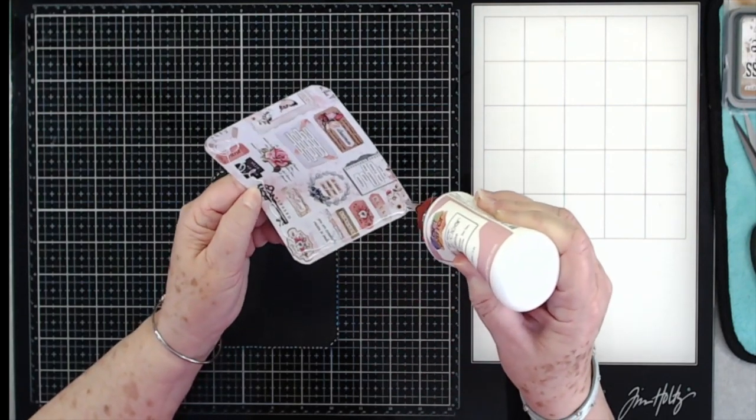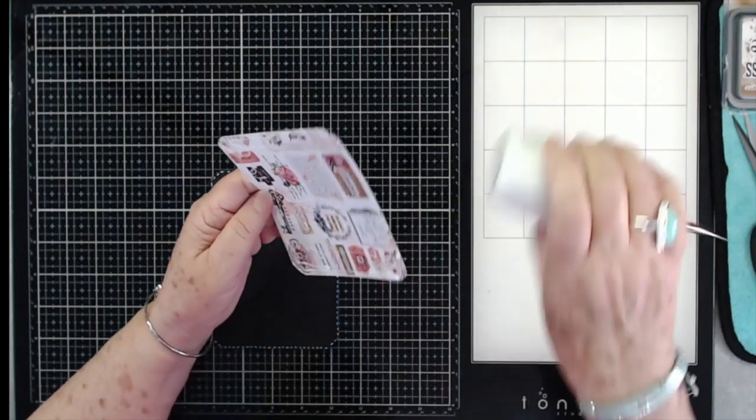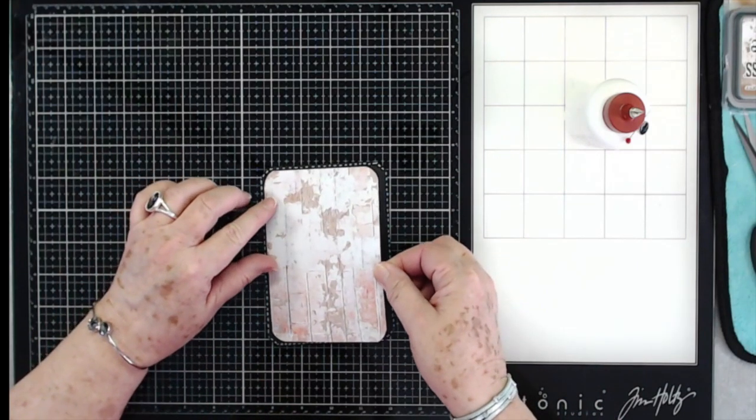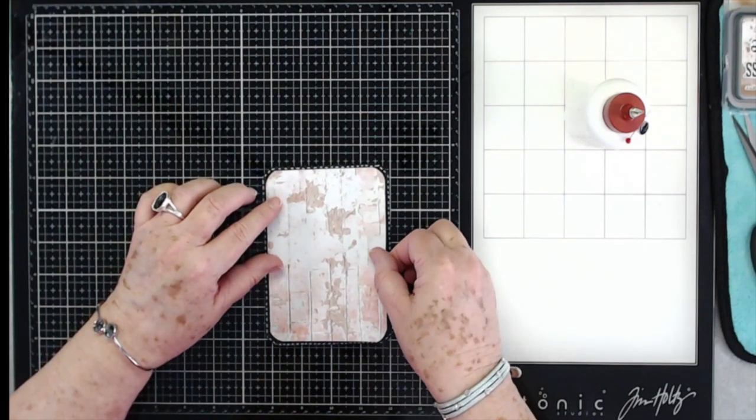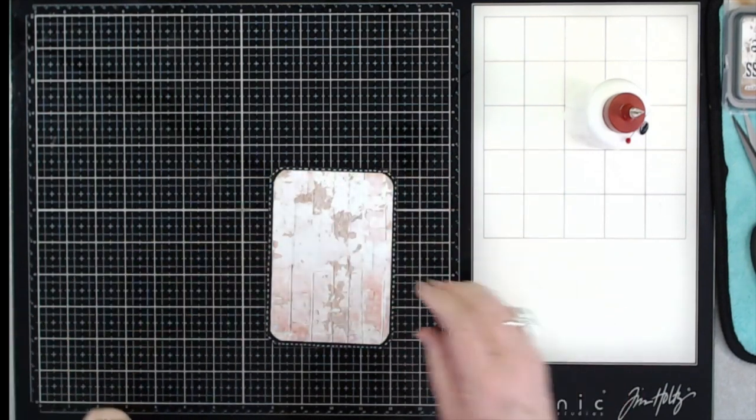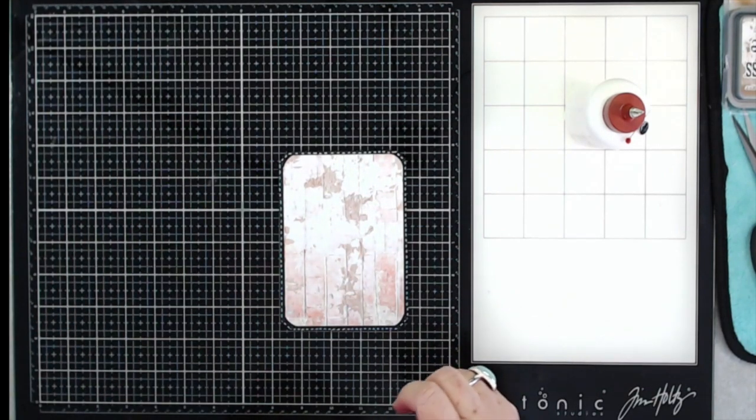This is some of the paper from our October kit, and I'm going to show you that even though you might not think this is a fall kit, I'm going to show you that you can make a fall card out of this. You can use it for fall.